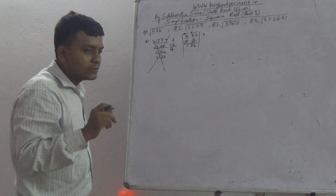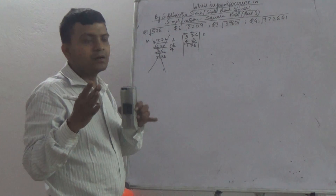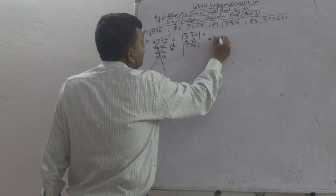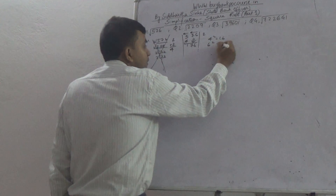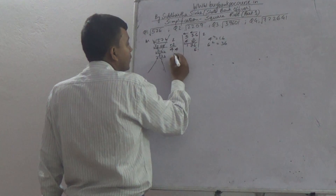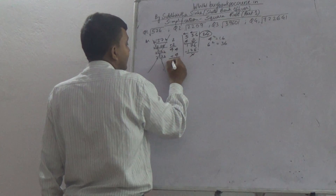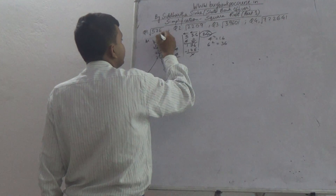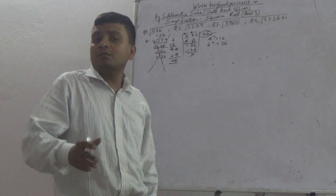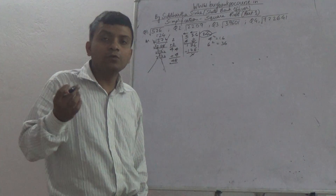Now, 6 is the last digit, so we need a number whose square has a unit place of 6. That gives us 4 squared = 16, or 6 squared = 36. Trying 4: 4 fours are 16, carry 1; 16 plus 1 is 17, which is divisible. So 24 is your answer. Remember to memorize squares, cubes, and tables up to 30 — it will be very helpful for your examinations.